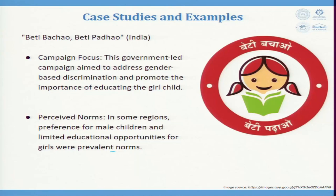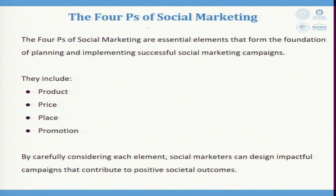The Four P's of social marketing are the essential elements that form the foundation of planning and implementation in social marketing campaigns: product, price, place, and promotion. In social marketing, price plays a very important role, especially if you want to have a self-sustaining action.